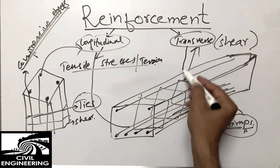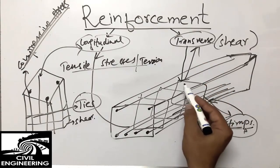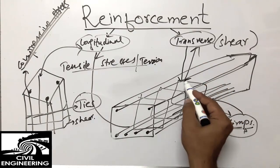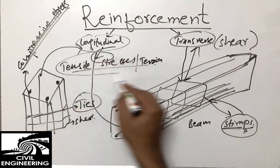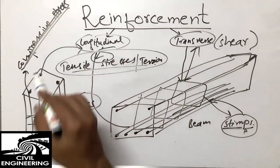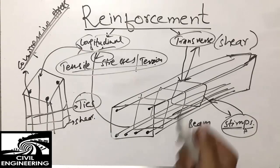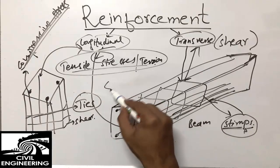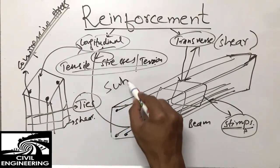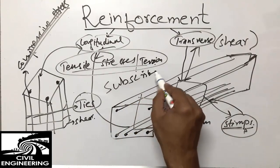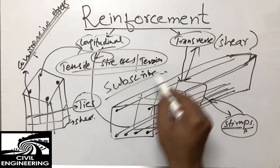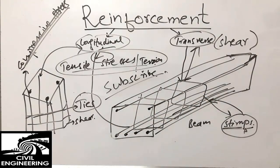So this was the difference between longitudinal and transverse reinforcement. Transverse reinforcement is used for holding and shear resistance, while longitudinal reinforcement is used mainly for tensile and compressive stresses. If you have any questions, please comment, and please don't forget to subscribe for more civil engineering videos. Thank you for watching.